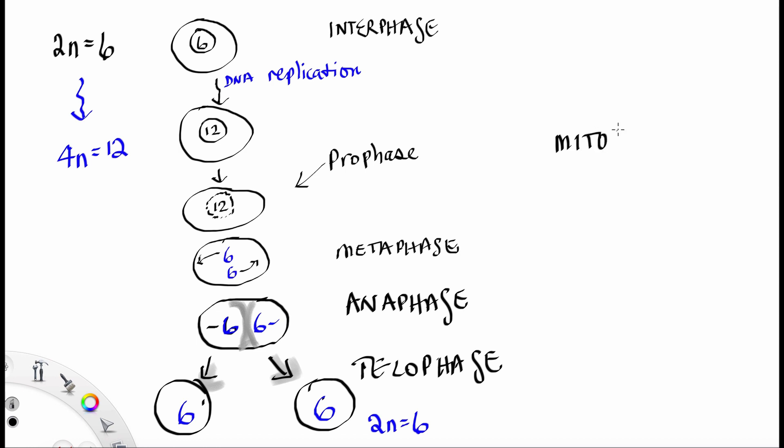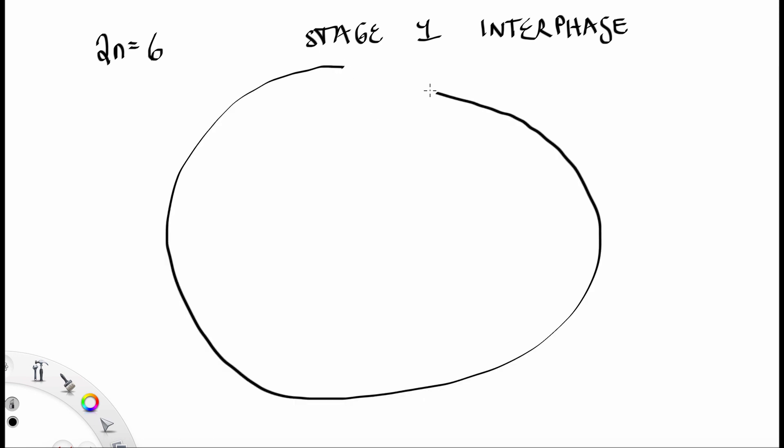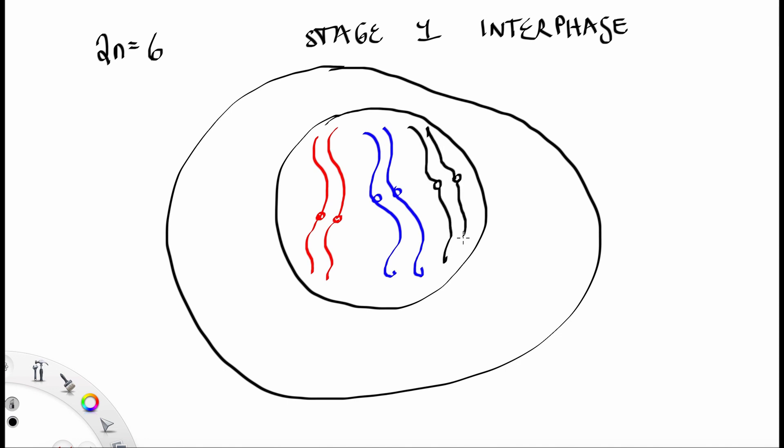This is mitosis by the numbers. So stage 1 is interphase. In interphase, we have 6 pieces of DNA. We have the head chromatin, the torso chromatin, and the feet chromatin. There are 6 pieces.